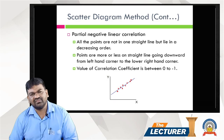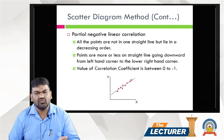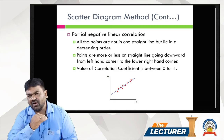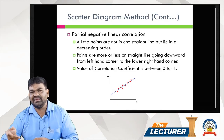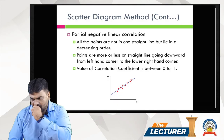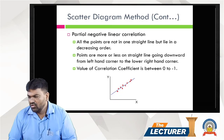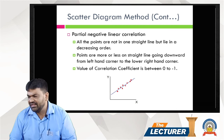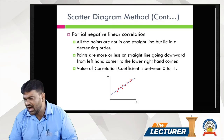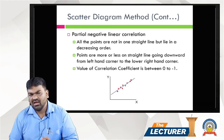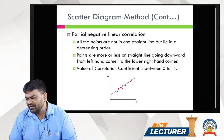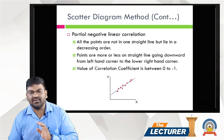Next is Partial Negative Correlation — the opposite of partial positive. For partial positive the trend is upward; for partial negative, the trend is downward. All the points are not in one straight line, but they are distributed in decreasing order. Points are more or less on a straight line going downward from the left-hand corner to the lower right-hand corner. The value of the correlation coefficient is between 0 and minus 1.